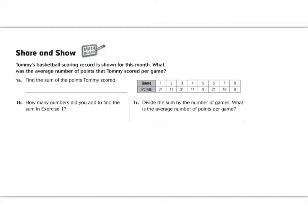Tommy's basketball scoring record is shown for this month. What is the average number of points that Tommy scored per game? The first step is that we need to find the sum. So it looks like we have 24, 11, 31, 14, 9, 21, 18, and 8. Pause and add up all those numbers together. When you finish adding, you should get a total of 136.